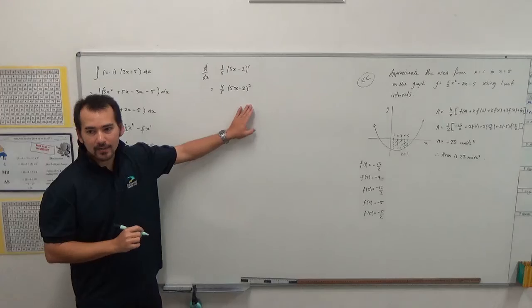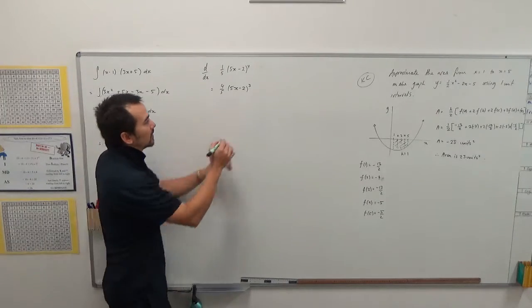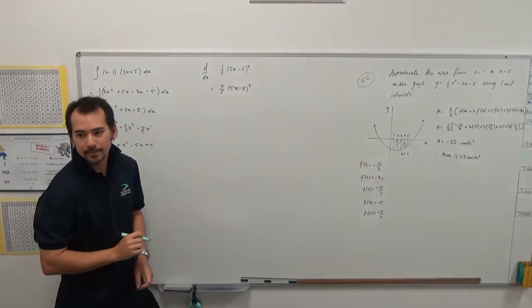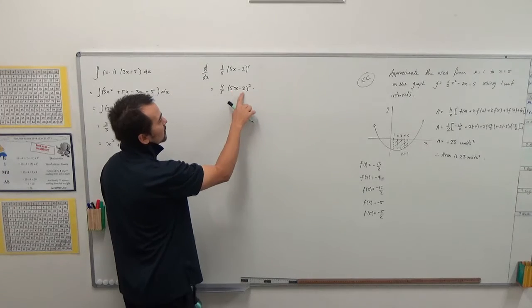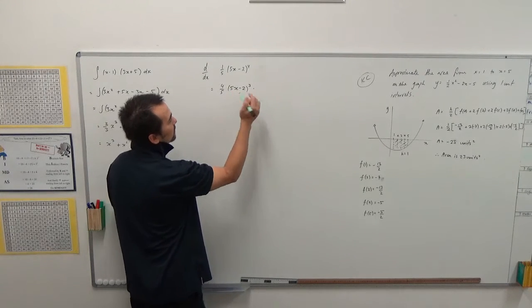Now we've derived the outside, some people tend to forget, we need to multiply by the derivative of the inside, so the derivative of the inside there is five.